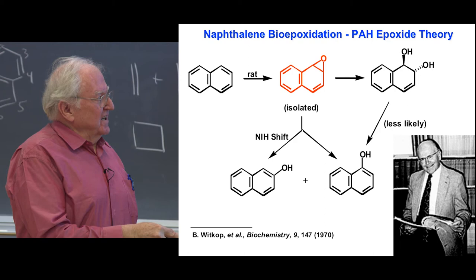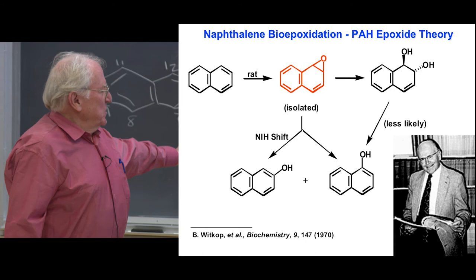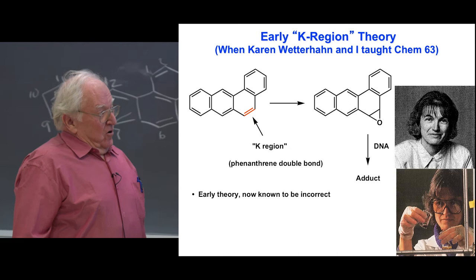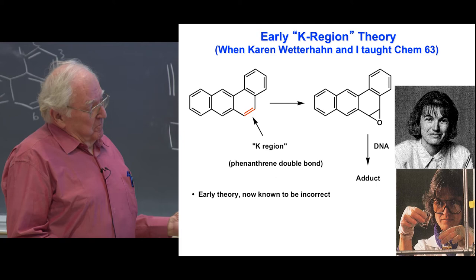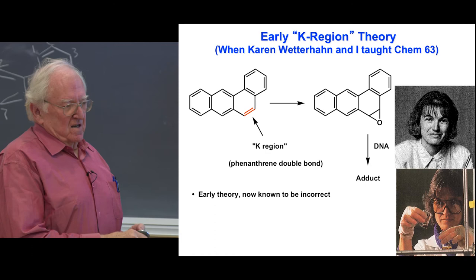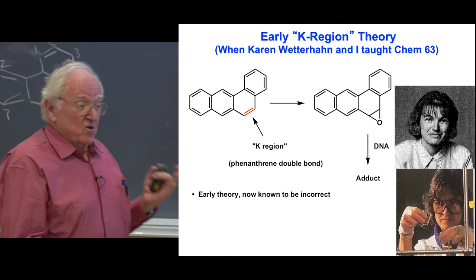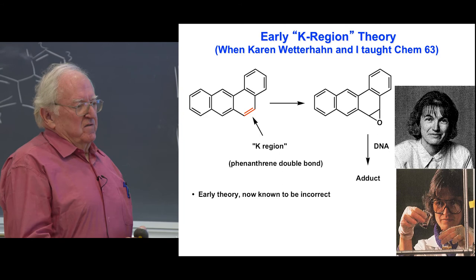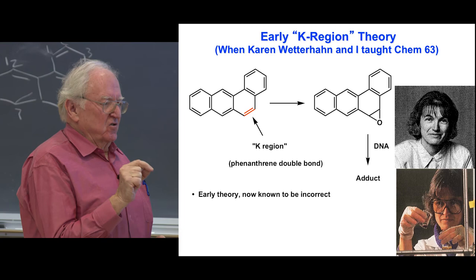Right away people thought maybe these are getting epoxidized first, and that's what's reacting with the DNA, not the bare hydrocarbon itself. The early theory — Karen Wetterhahn worked on this as a graduate student — thought that the phenanthrene-type double bond at the K region would be epoxidized, and that epoxide reacts with DNA. But now we know, even though this does happen, it's not the proximate carcinogen — it's not the stuff that actually induces the cancer.